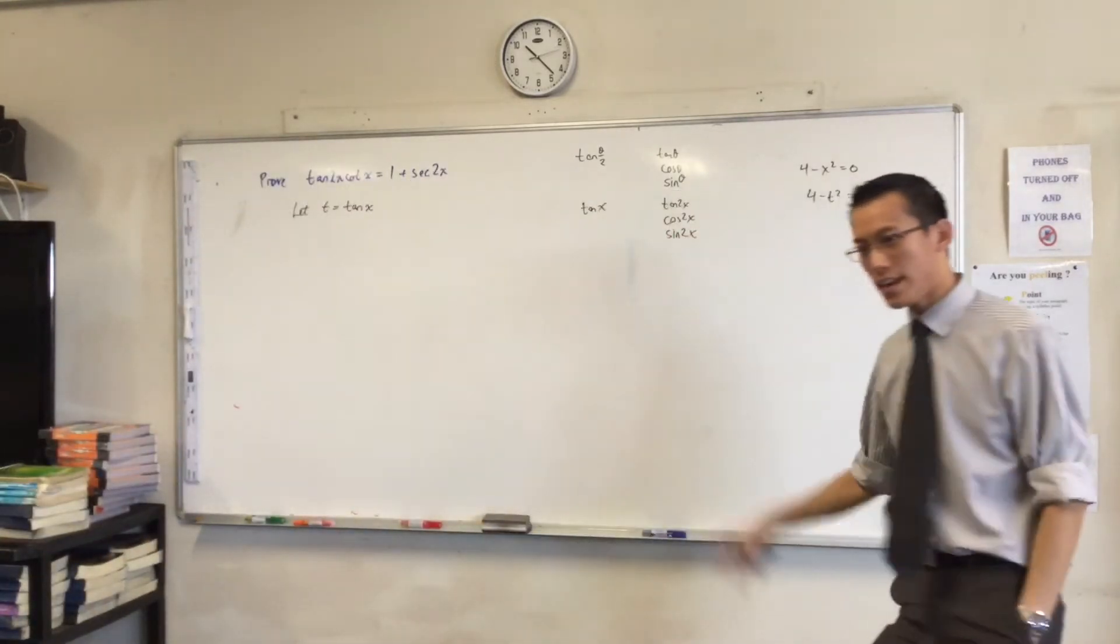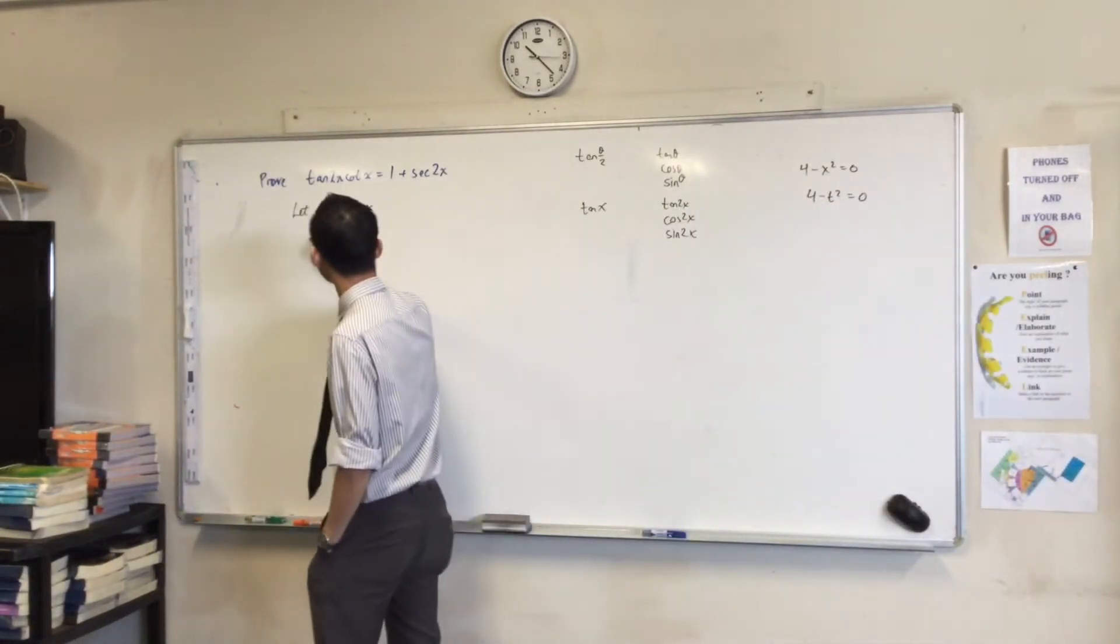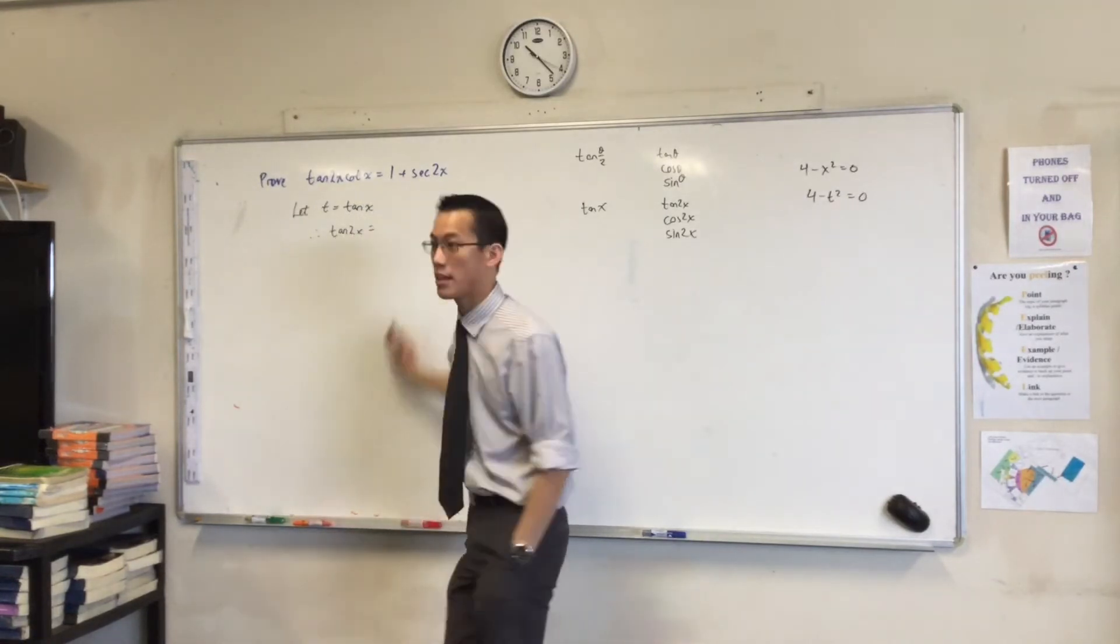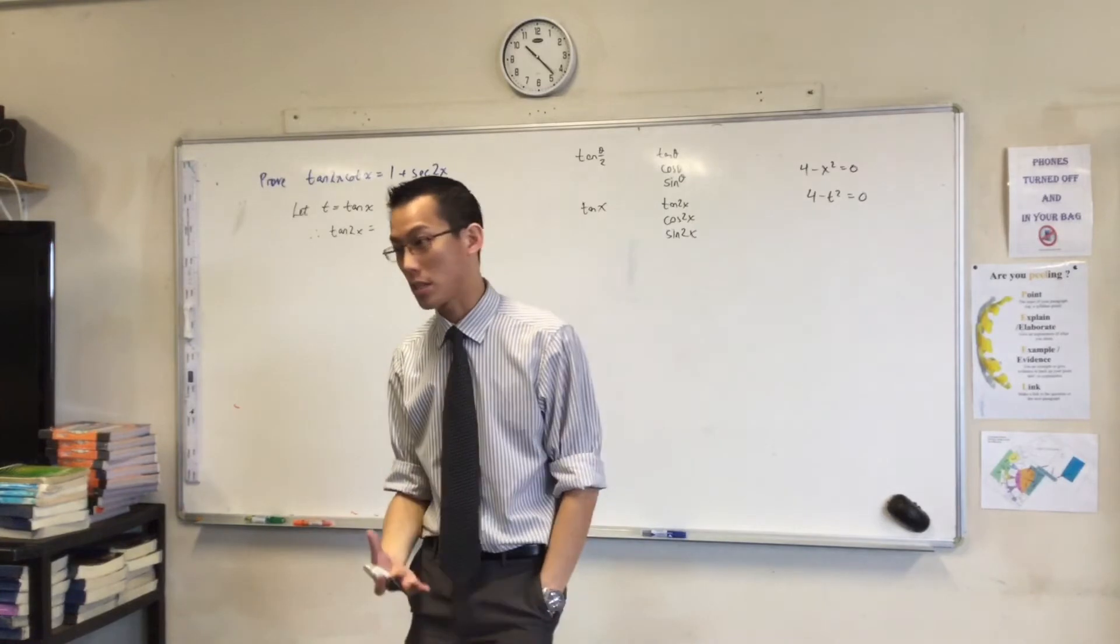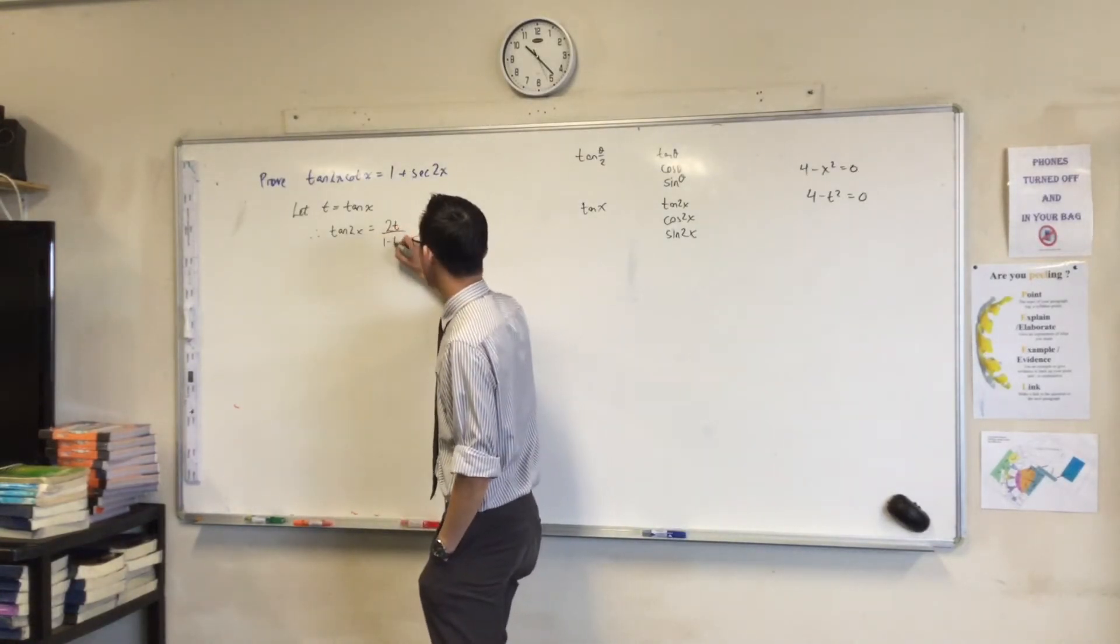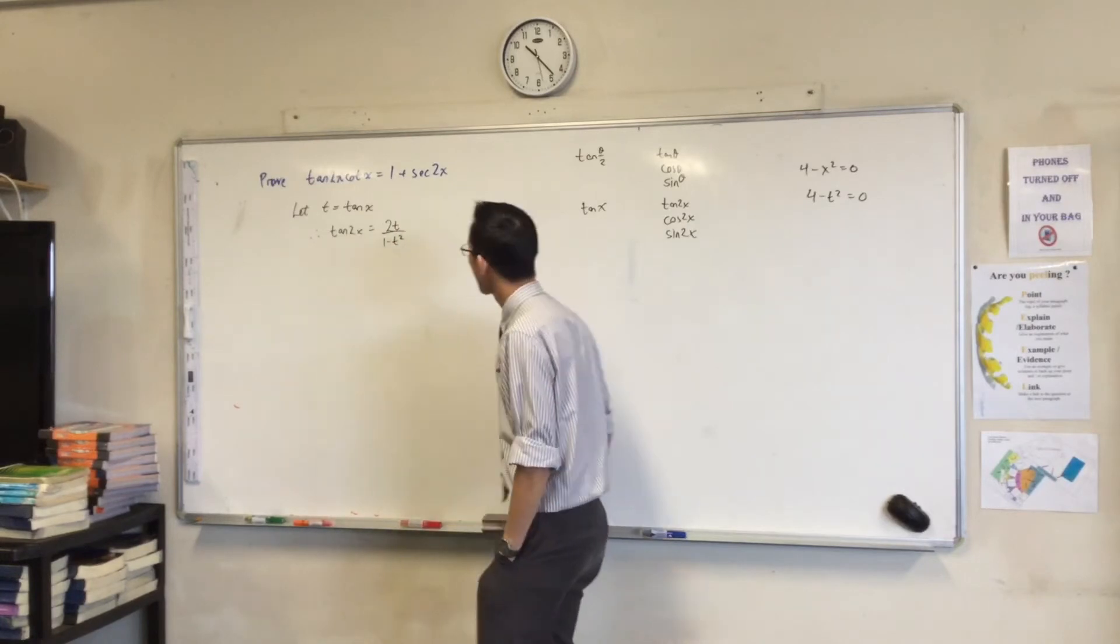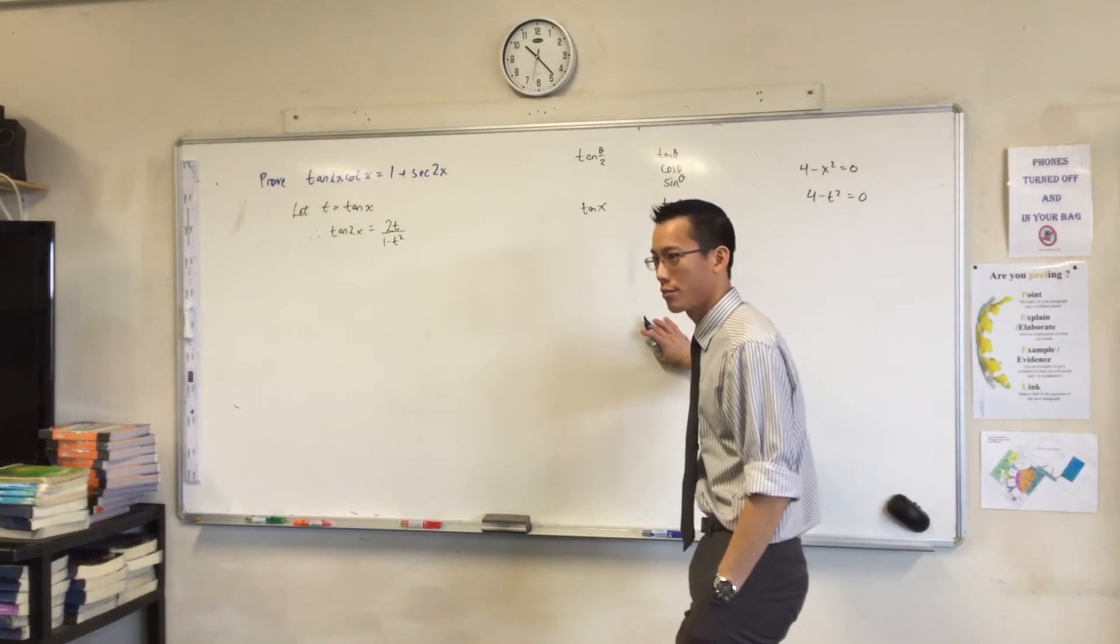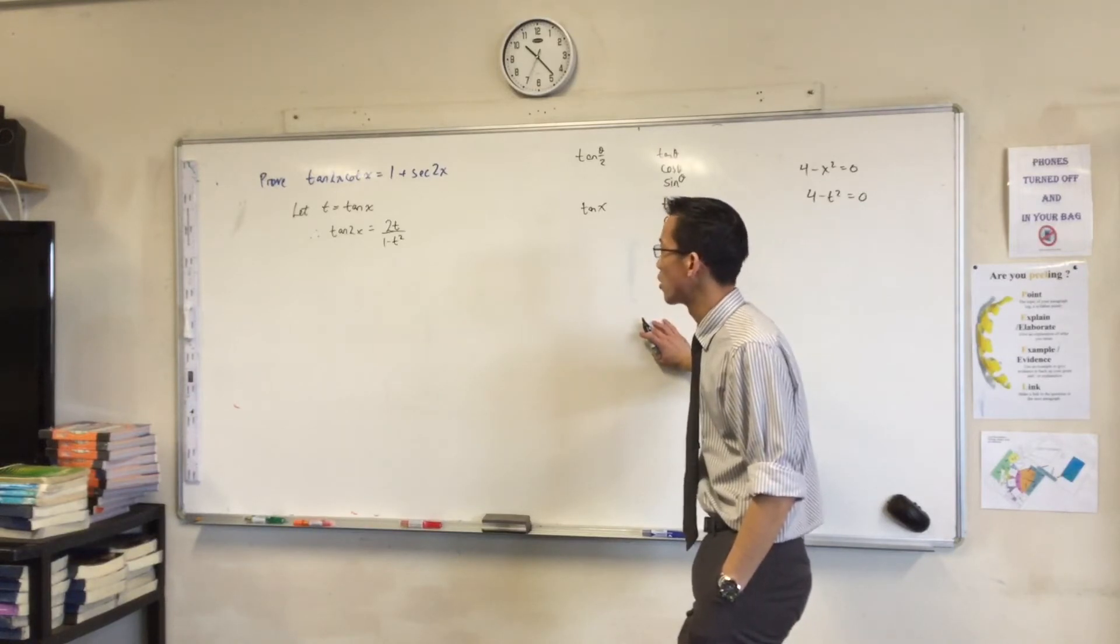So if t equals tan x, therefore I can say tan 2x will be equal to... And then I'm just going to quote the familiar t-results that I know. For tan, it's 2t on 1 minus t squared. I could say sine 2x, but I'm not going to. Can anyone see why? At least not yet.